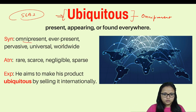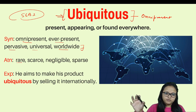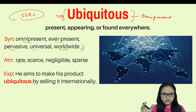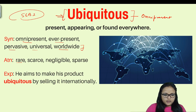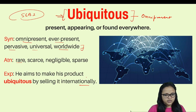Synonyms of ubiquitous are: omnipresent, ever-present, pervasive, universal, and worldwide. Antonyms are: rare, scarce, negligible, and sparse — because if something is found everywhere, the opposite would be rare or hard to find. Example: He aims to make his product ubiquitous by selling it internationally, because he wants his products to be recognized worldwide.